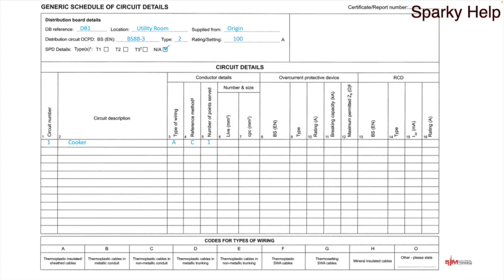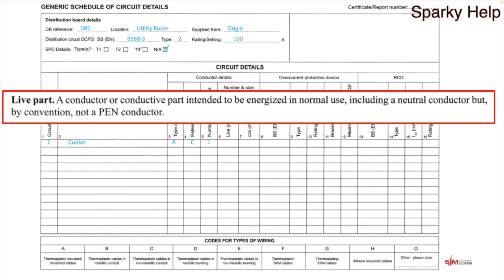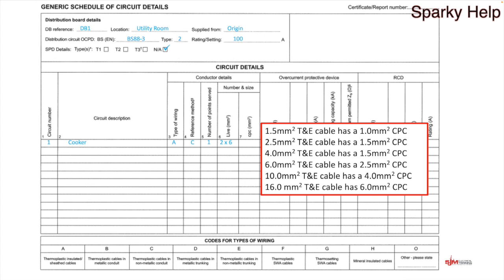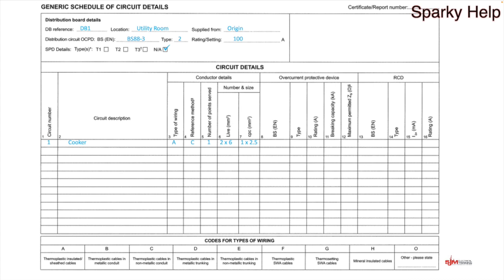The next columns cover live conductors and CPC conductors — now we have number and size of conductors. A live part is a conductor or conductive part intended to be energised in normal use, including a neutral conductor but not by convention a PEN conductor. The PEN conductor is what the electricity company brings in on a TN-C-S system. So when we count the number of conductors, it's how many lines and neutrals. For the cooker I'm going to go with 2×6mm — it's a twin and earth cable. The CPC is actually smaller in a twin and earth cable: a 6mm twin and earth cable has a 2.5mm² CPC, and there's only one, so you put 1×2.5.